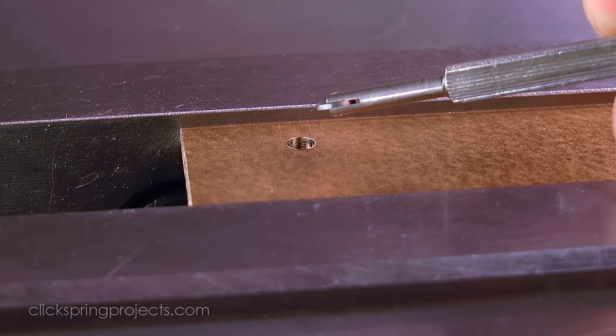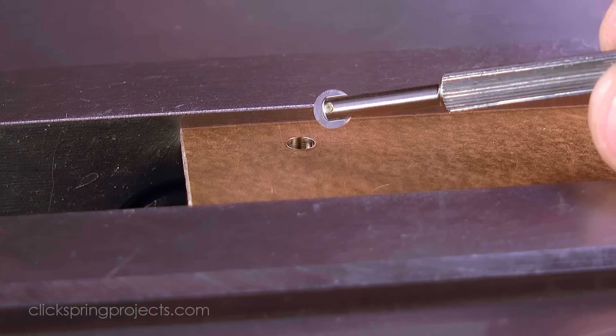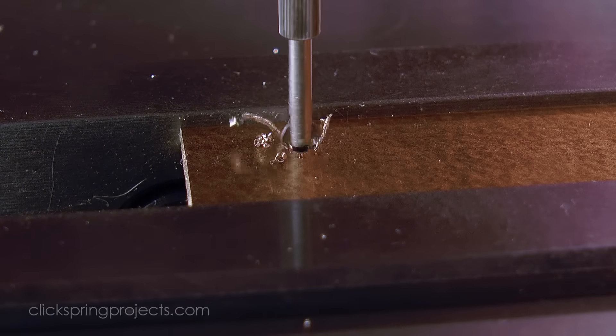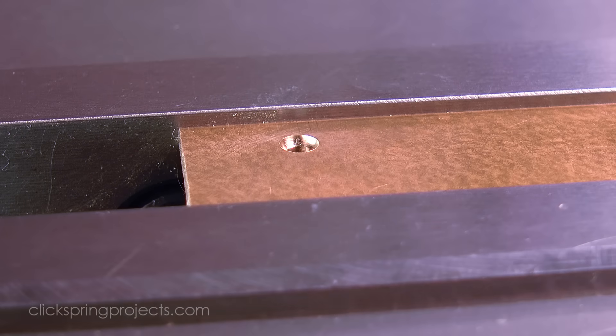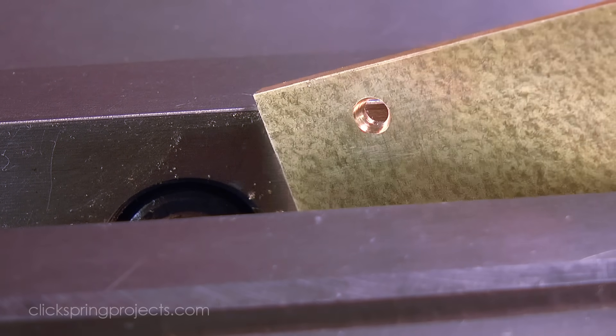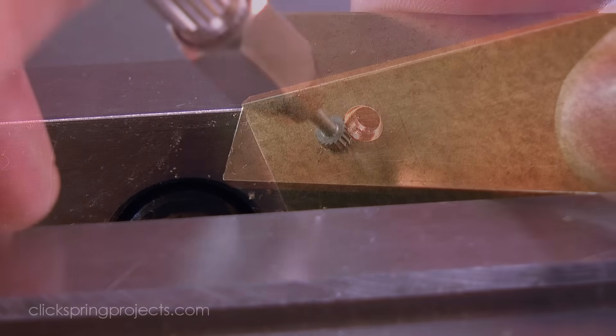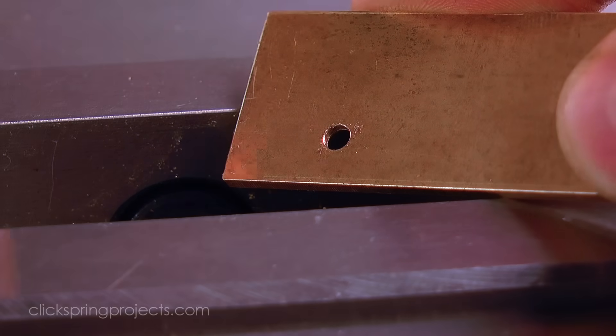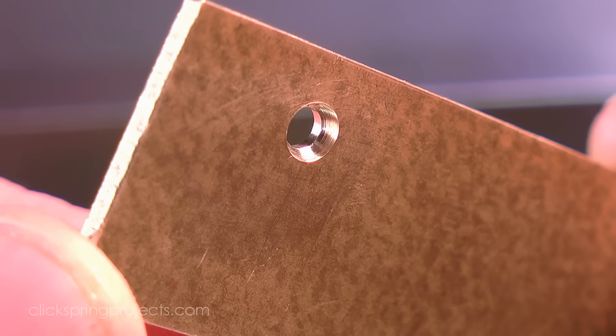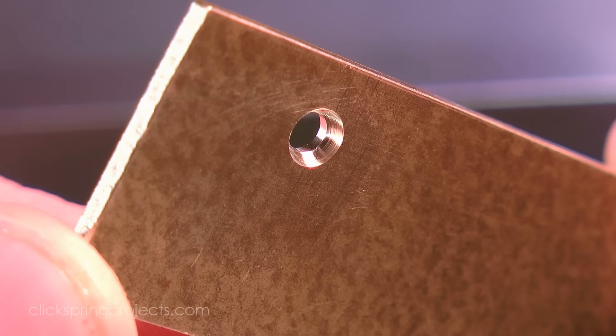As is typical in a horological setting, an oil sink can now be cut at that same location. An oil sink helps to retain oil in the jewel under normal operations, but it also tends to become an aesthetic feature of the device too, which I'll get back to later in this video. The result is a hole well sized in both diameter and depth, ready to receive a jewel.